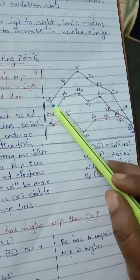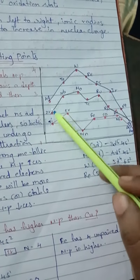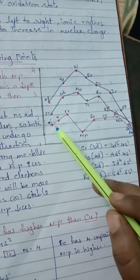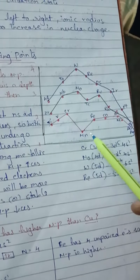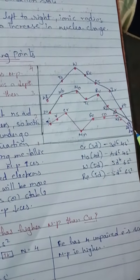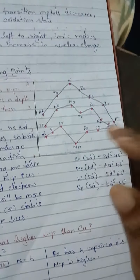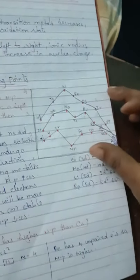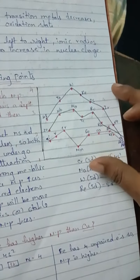We have taken three series: 3D series, 4D series, and 5D series — from scandium, titanium, vanadium, chromium, manganese, iron, cobalt, nickel, copper, and zinc. Zinc will be present at last. Here in the melting point of transition metals...